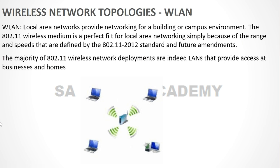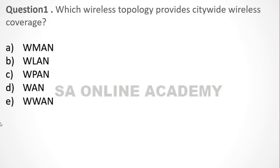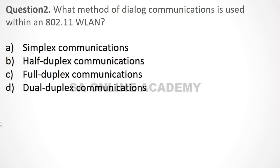We're done with today's session. I kept it concise since these are the basics. In the next session we'll discuss 802.11 topologies specifically. Now for today's quiz questions: Which wireless topology provides city-wide wireless coverage — WMAN, WLAN, or WPAN? And what method of communication is used within an 802.11 WLAN — simplex, half duplex, full duplex, or dual duplex? Be ready with your answers for the next session.